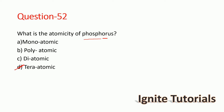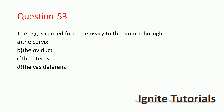Question 52: What is the atomicity of phosphorus? The atomicity of phosphorus is tetra-atomic, so option D is the correct answer. Question 53: The egg is carried from the ovary to the womb through which structure? The options are cervix, oviduct, and uterus.